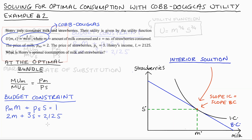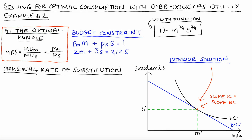The second thing I'm going to do is find our marginal rate of substitution, and to do that I need to find our marginal utilities. The marginal utility of milk equals the partial derivative of our utility function with respect to m. Treating s to the power of 3 quarters like a constant, the exponent 4 over 6 comes out to the front, and m is raised to 4 over 6 minus 1, which equals negative 2 over 6. We leave s to the power of 3 quarters as is.